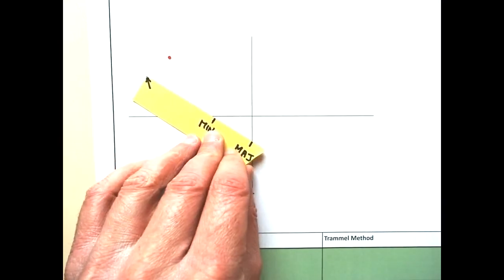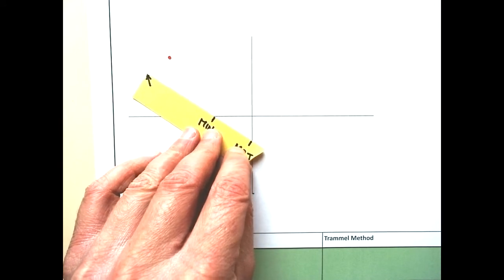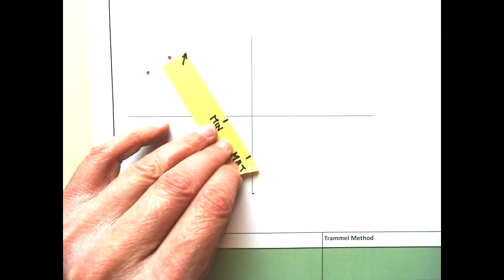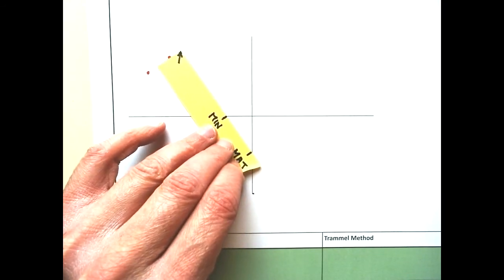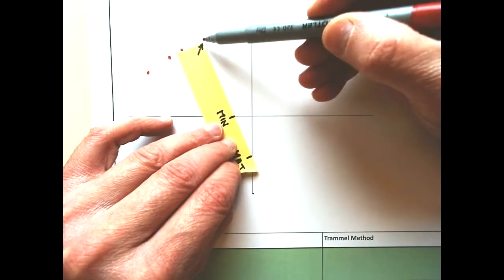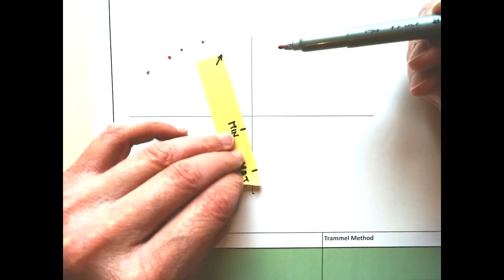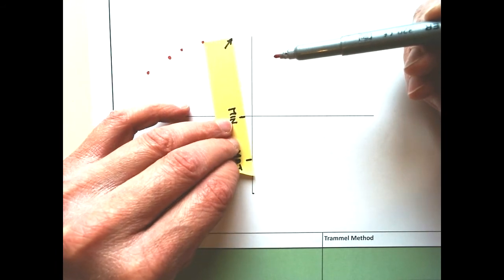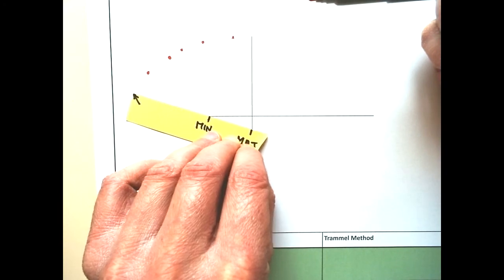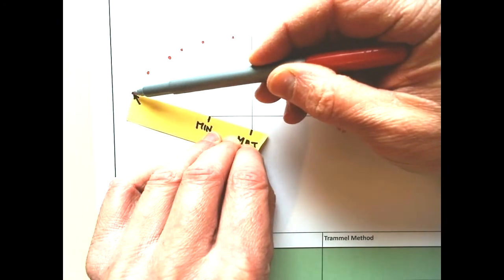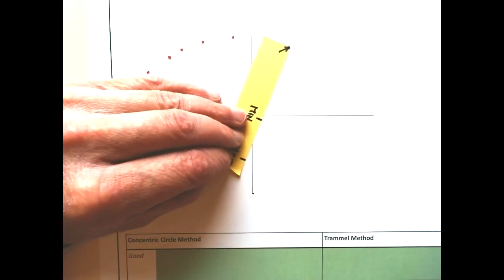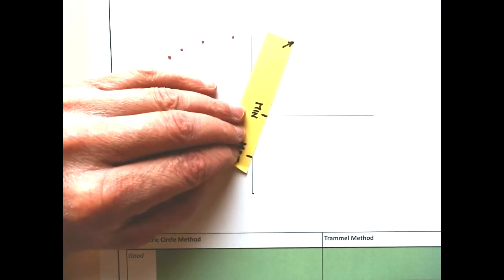Move it around, make sure you line it up every single time. Move it around and you can find lots of points on the curve. You can add as many points as you want or as few. The more points you add, the more accurate your ellipse will be.